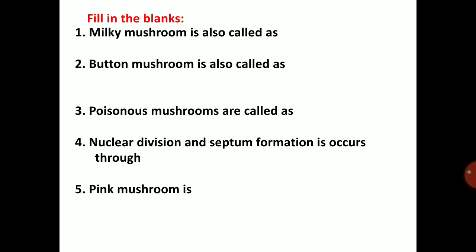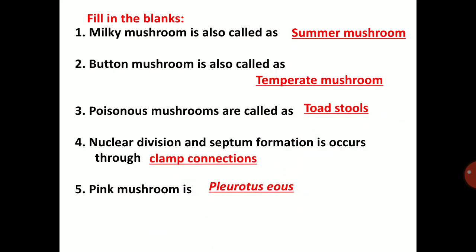Summary questions: Milky mushroom is also called summer mushroom. Button mushroom is also called temperate mushroom, as it prefers low temperature. Poisonous mushrooms are also called toadstools. Nuclear division and septum formation occurs through clamp connections. Pink oyster mushroom is Pleurotus eos (APK1). Thank you.